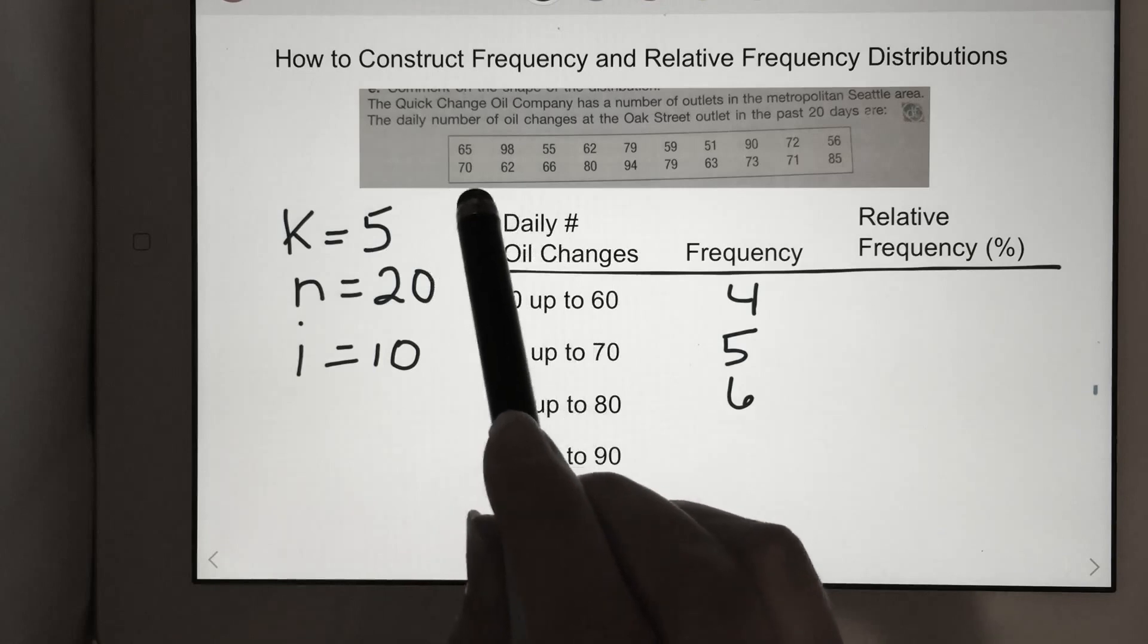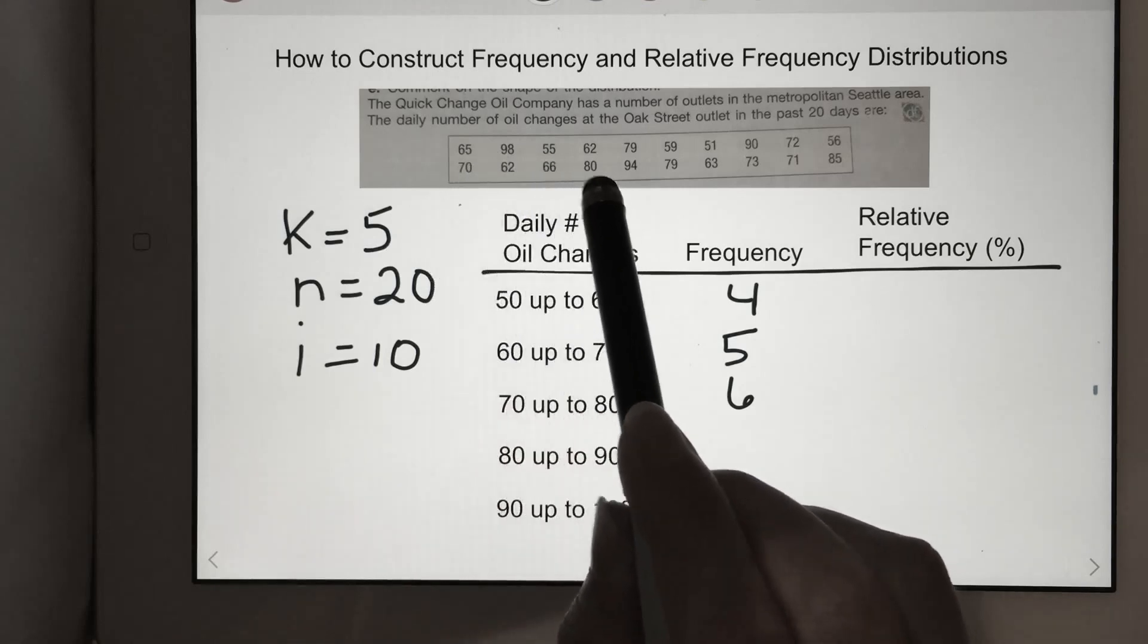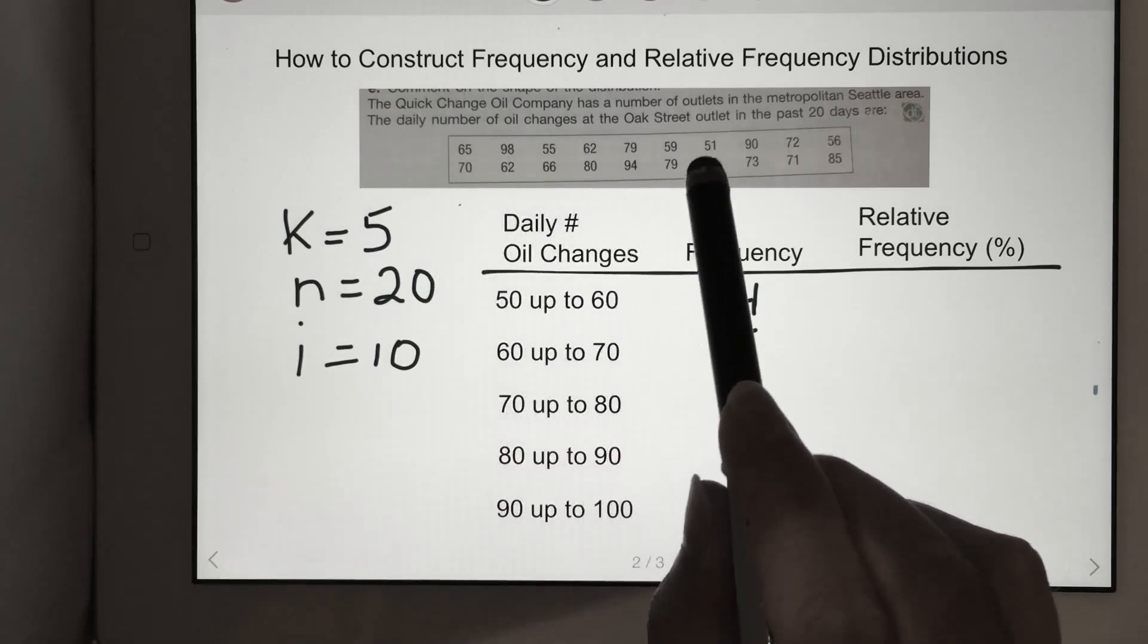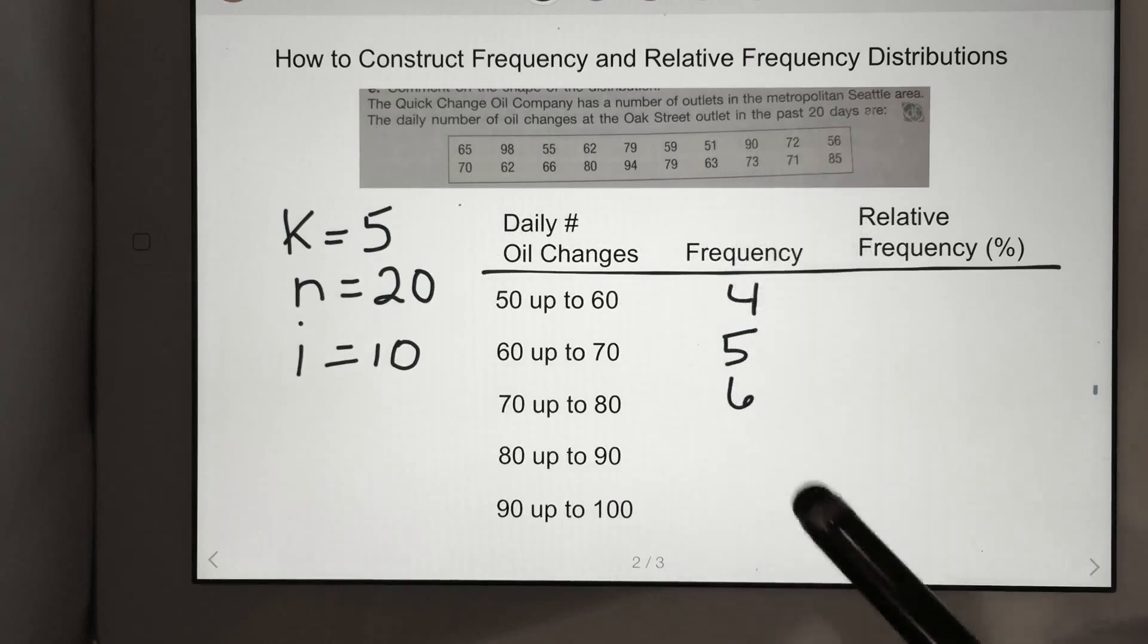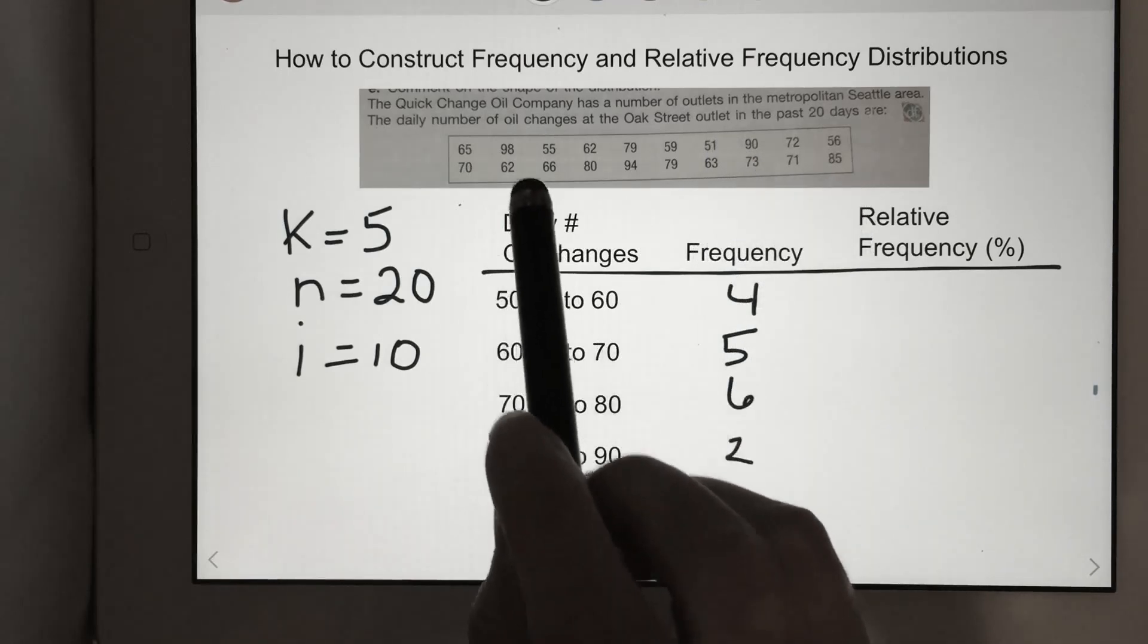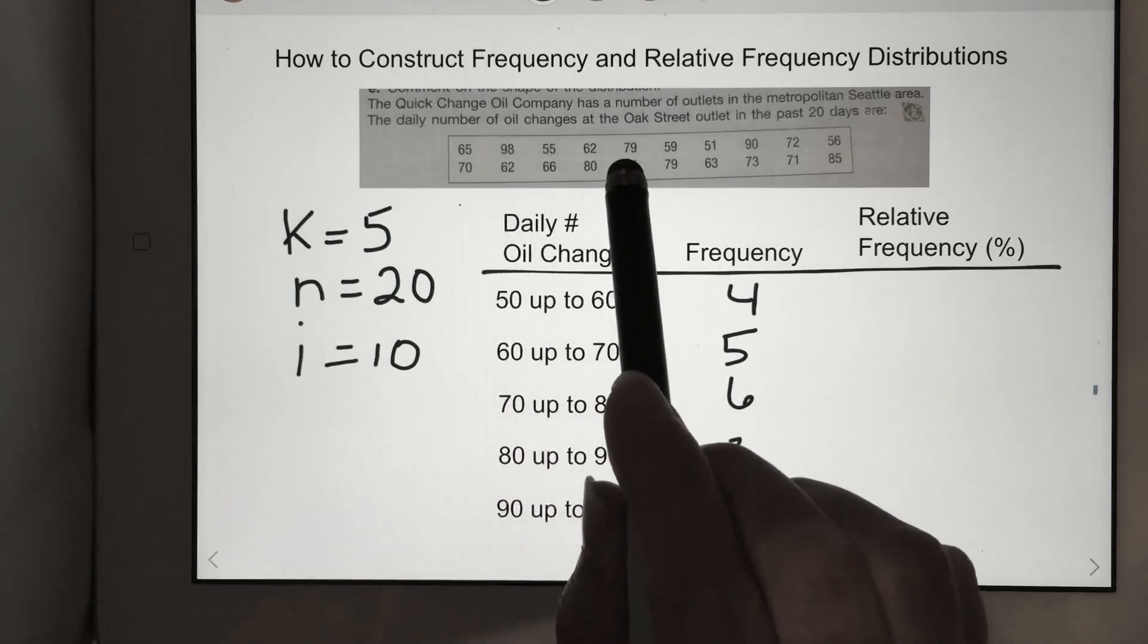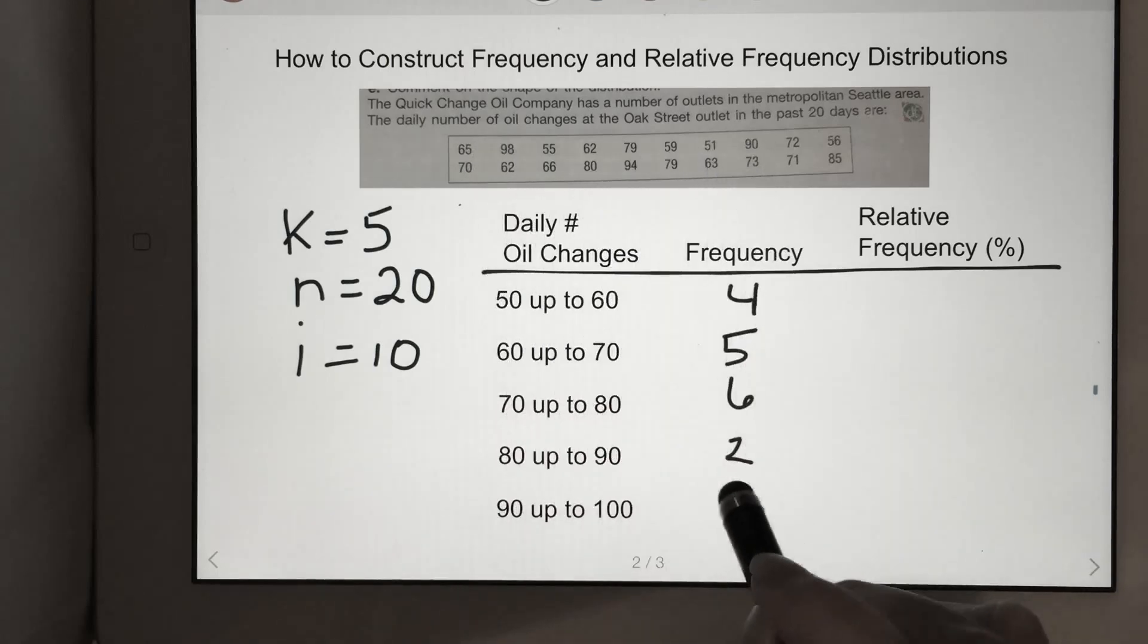80 up to 90: 1, 2. And 90 to 100: 1, 2, 3.